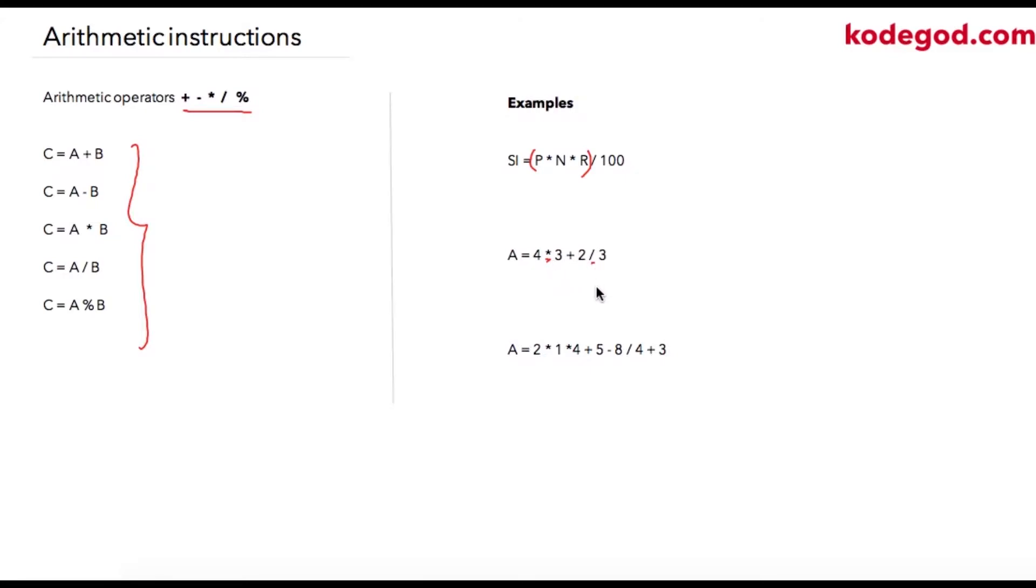If you remember normal BODMAS rules, precedence will be given to percent, multiplication, division, then plus and minus, and then to the equal to symbol. So assignment happens when all the calculations are done.